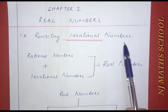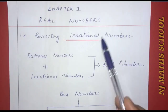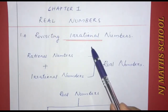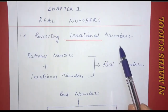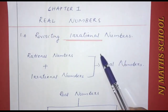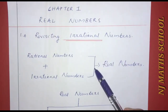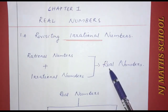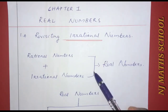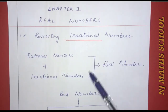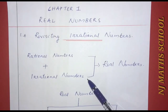Chapter 1: Real Numbers. The next section is revisiting irrational numbers. We are learning about real numbers, which consist of rational numbers and irrational numbers.